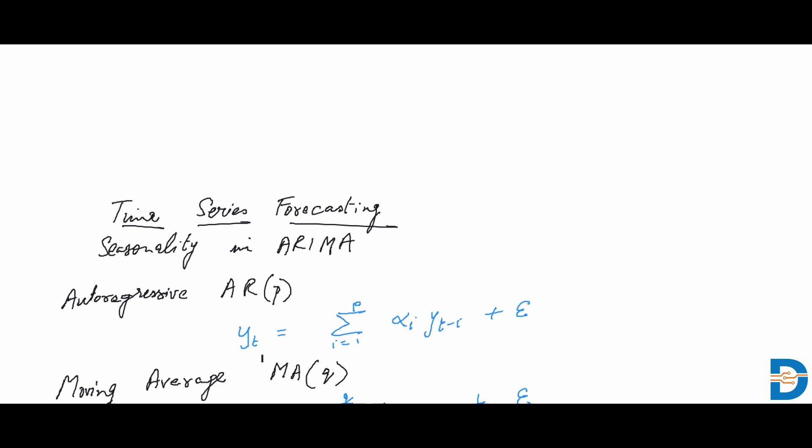yt basically is the predicted value at time t given as a function of the summation of the past values, the past p values, where you are having a multiplier alpha for each of those past terms and the summation of all these past observations added to a certain term epsilon which is nothing but the white noise.